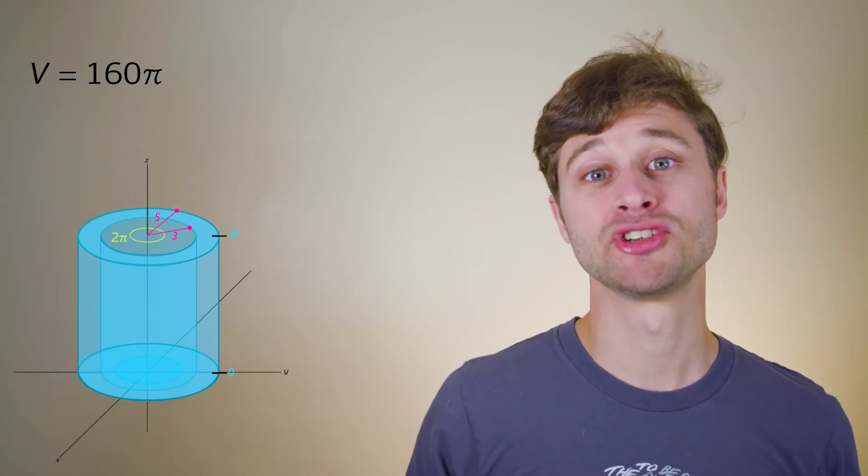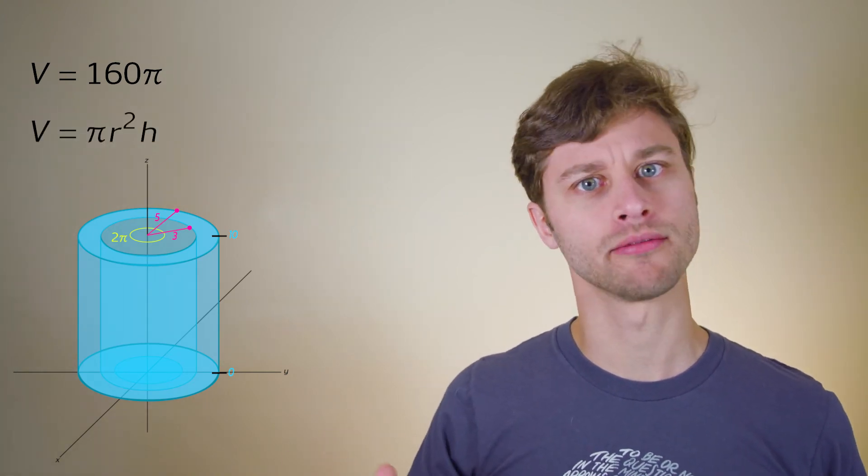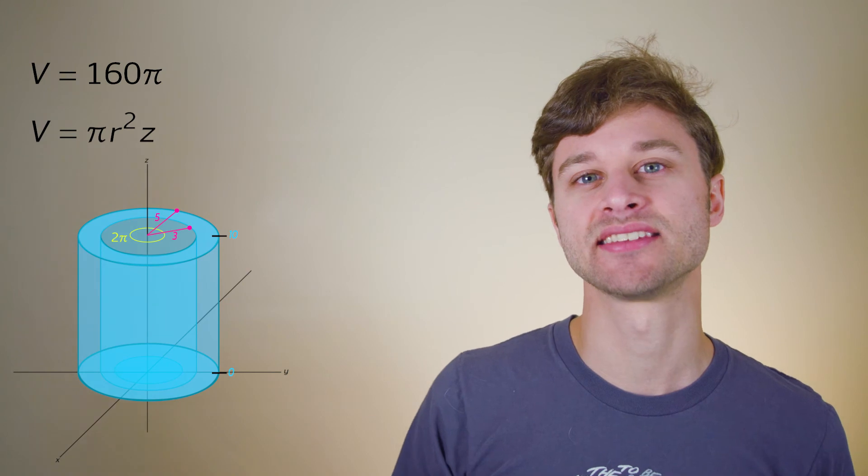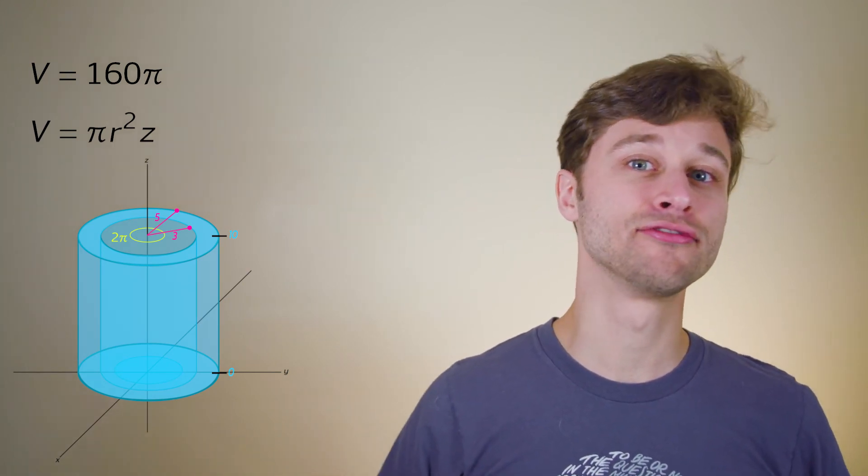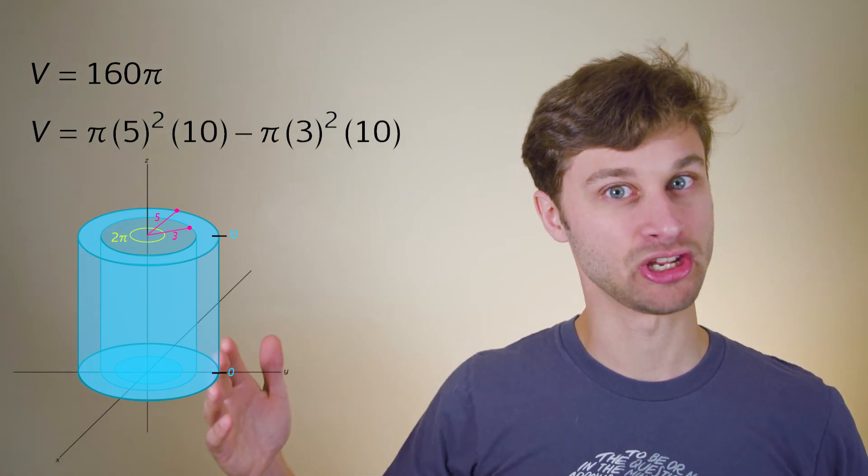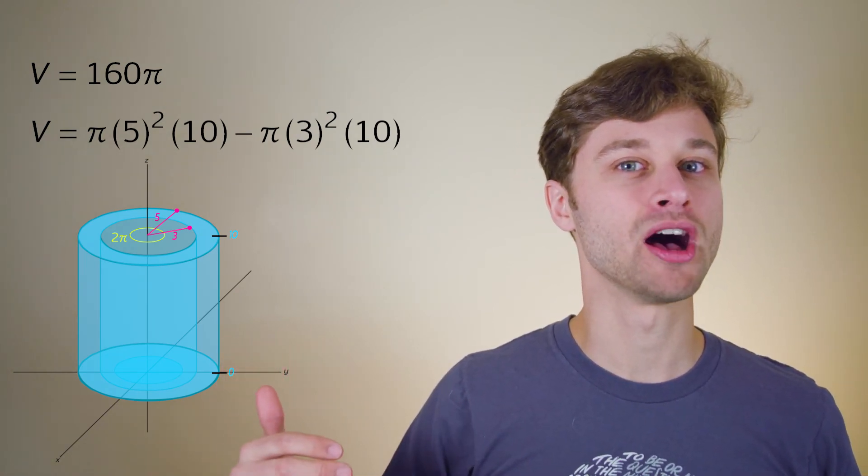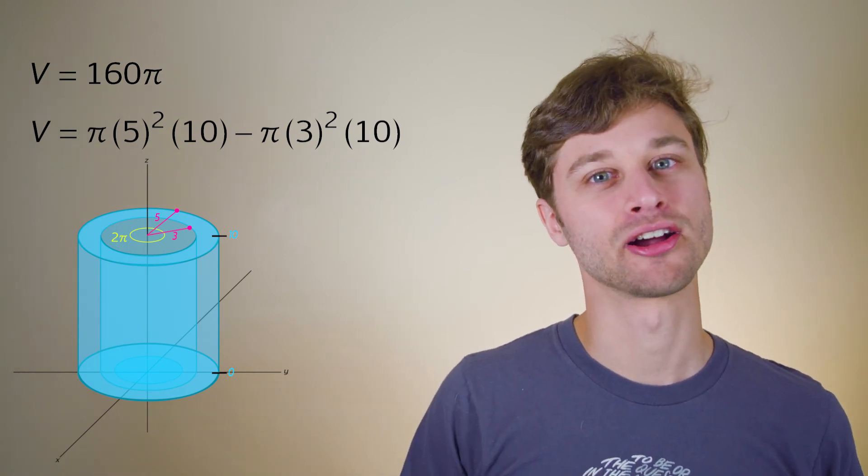Bonus tip, if you remember from geometry that the volume of a cylinder is equal to pi r squared h, where h is equal to z in this case, we can see that the volume of our sheath is really just the volume of a 5 radius cylinder, 10 units long, minus the volume of a 3 radius cylinder, also 10 units long. If you do that math, we should also find that we get a volume of 160 pi cubic units.